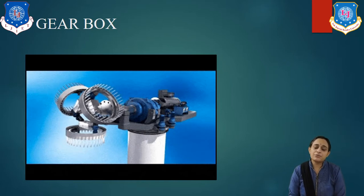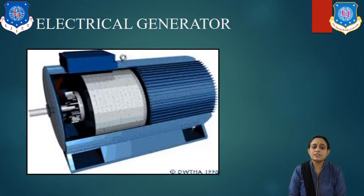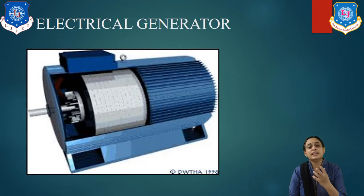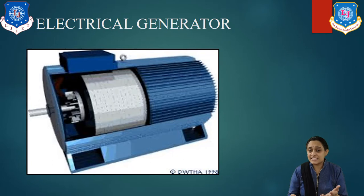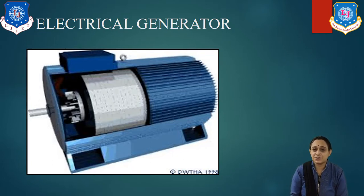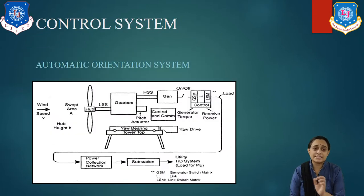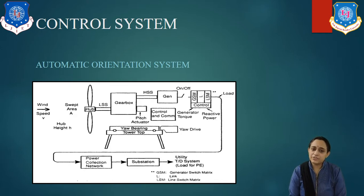If we talk about the electrical generator, it converts mechanical energy into electrical energy. There are generally DC and AC generators: variable frequency constant voltage AC generator, and constant frequency constant voltage AC generator. Winds are always irregular, so the rotor rotates at different speeds varying from 0 to maximum.